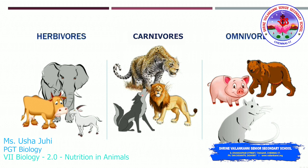Carnivores — look at this picture — are meat eaters. Omnivores — look at this picture — eat both plants and animals.